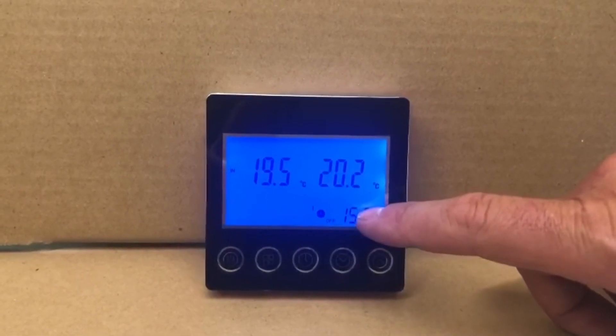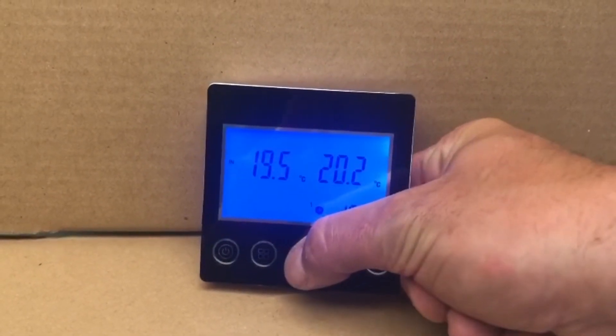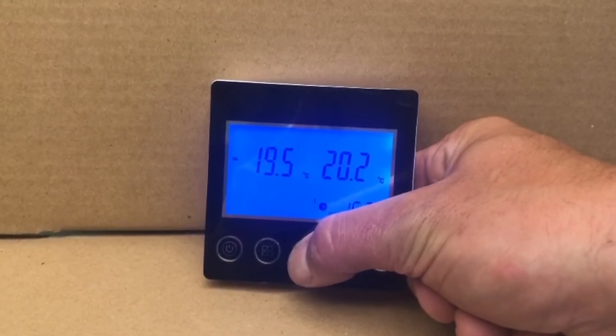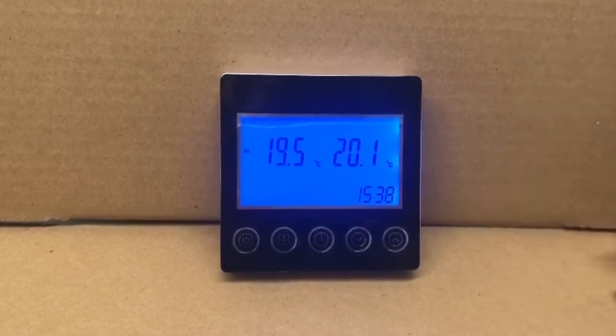To cancel the timer, we simply press and hold the clock button for three seconds, and the timer disappears. That's all, the timer is cancelled.